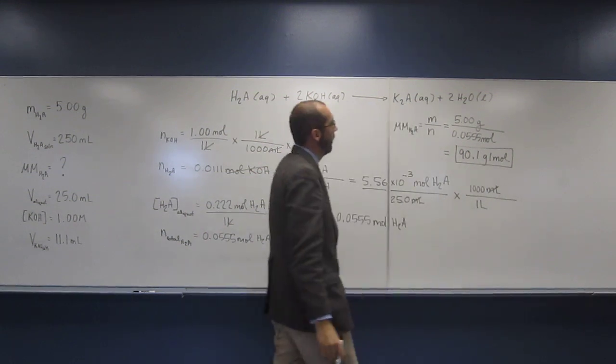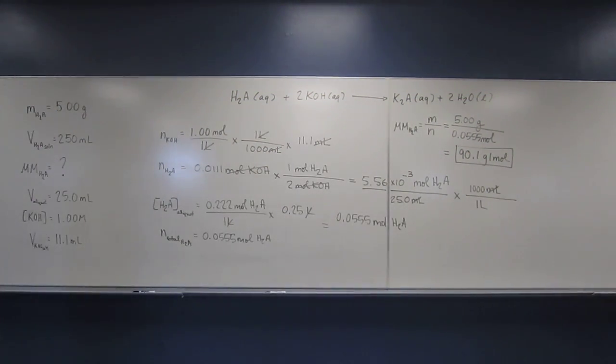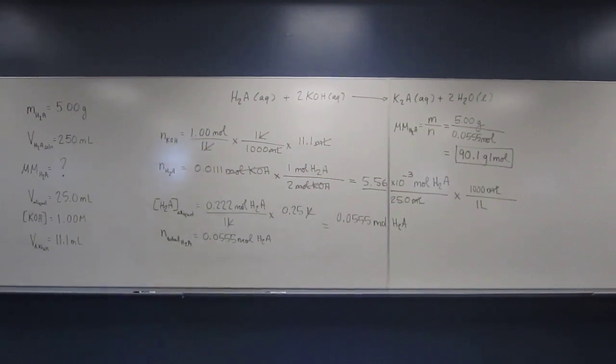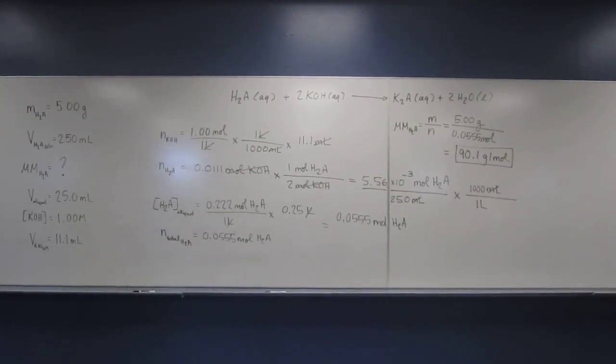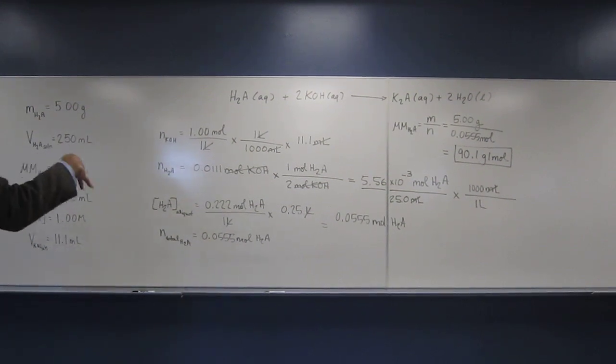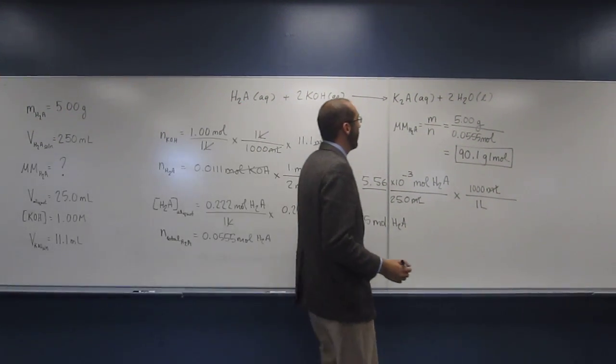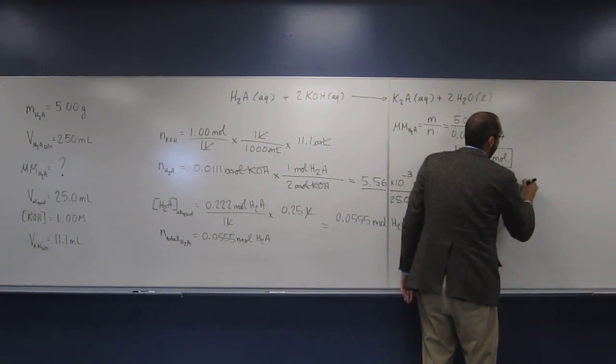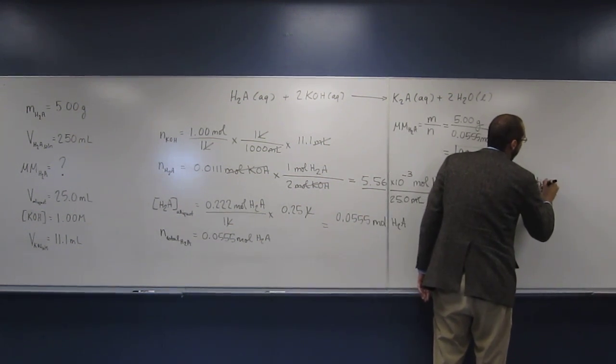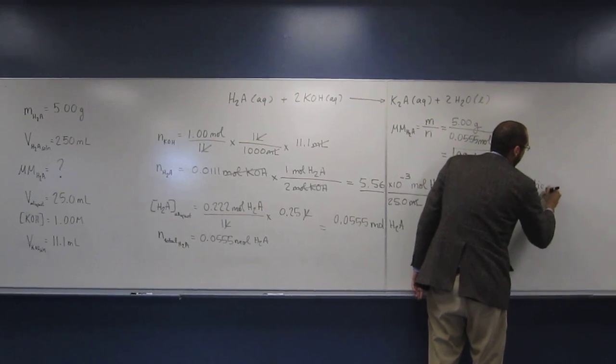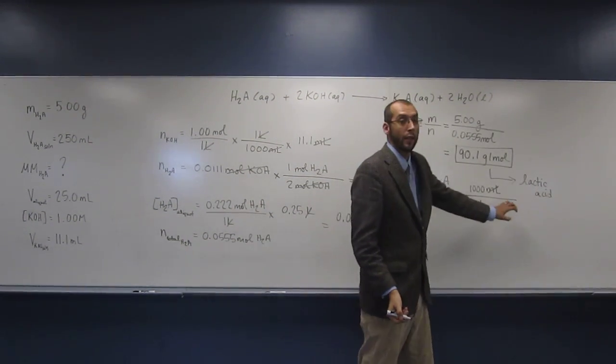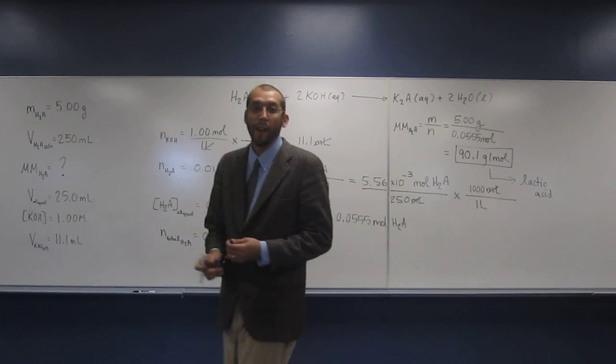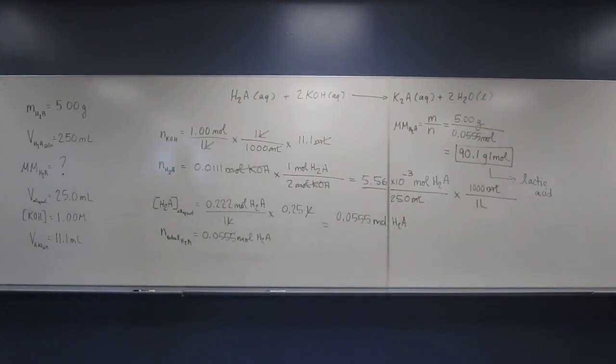So if you look on our table of diprotic acids, you can figure out what acid this actually was. So if you look at the molar masses, you can see that the closest one to this would be lactic acid. So that's the identity of this acid.